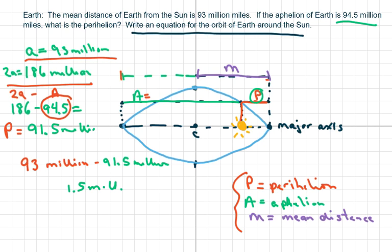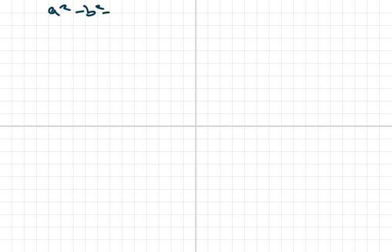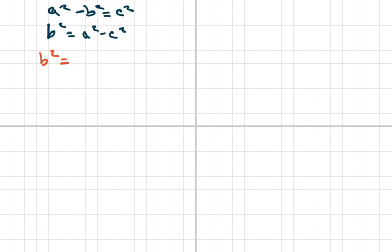Now we have to find B. We'll use the ellipse relationship: A² minus B² equals C², or equivalently B² equals A² minus C².